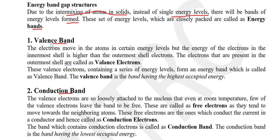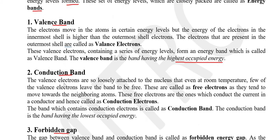So we have three types of energy bands: valence band, conduction band, and the forbidden energy gap. The valence band is the band having the lowest occupied energy. The conduction band is responsible for current conduction in the semiconductor. The forbidden gap is the gap between the valence band and conduction band — it is called the forbidden energy gap. In this region, there is no electron; it is just a gap in which there is no energy. When valence electrons jump to the conduction band, they pass through the forbidden energy gap.